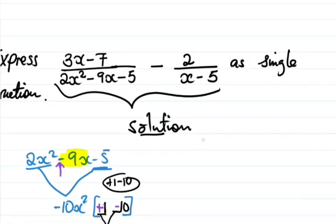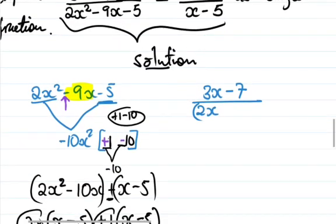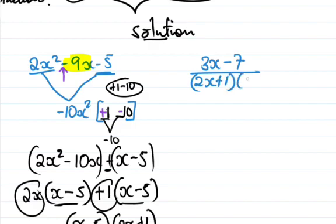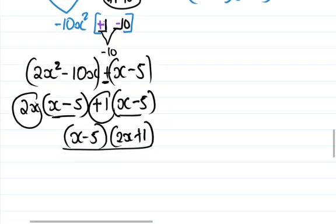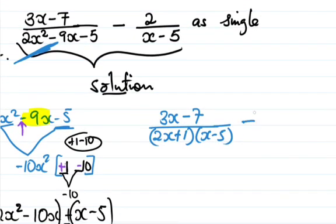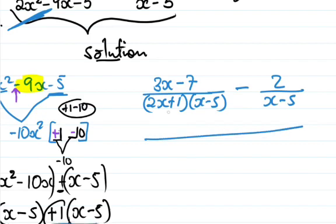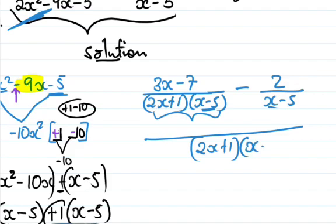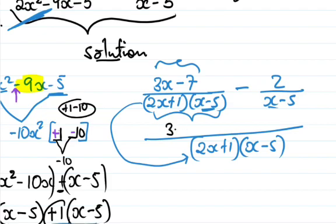We can now write the expression as (3x minus 7) divided by (2x plus 1)(x minus 5), minus 2 divided by (x minus 5). The common denominator is (2x plus 1)(x minus 5). So the numerator becomes 3x minus 7 minus 2 times (2x plus 1).